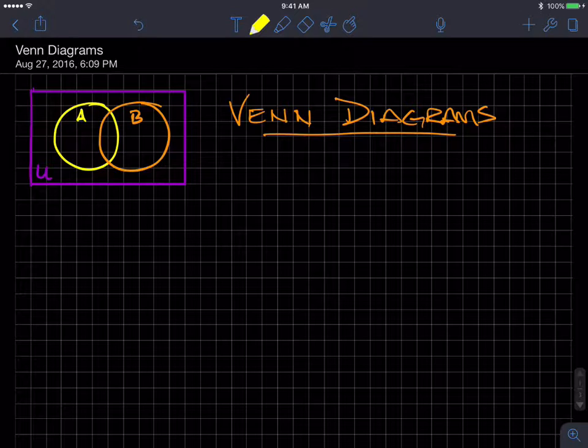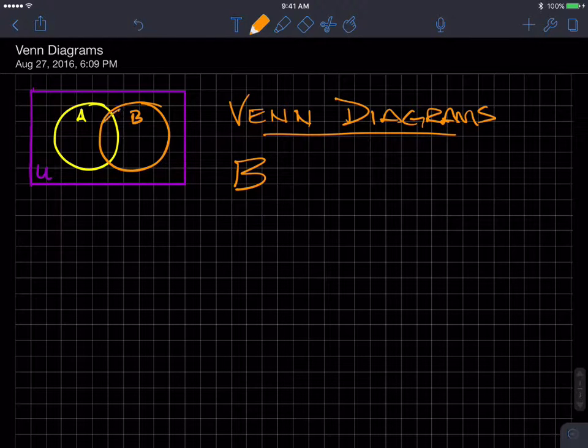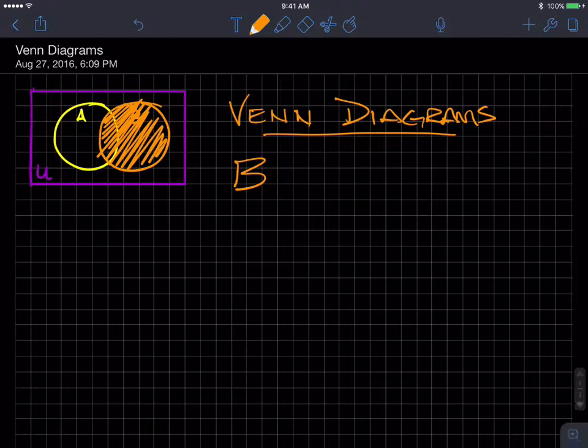If I were to try to identify that which was in set B, you would shade everything that's in here. Now note that there are items that are in B that are also in A, but it doesn't matter. I'm asking what are all the items that are in B?